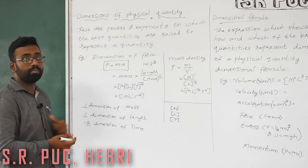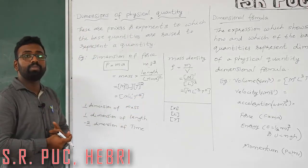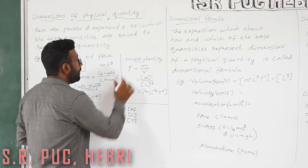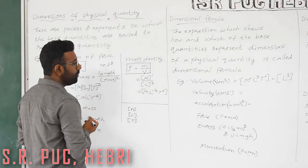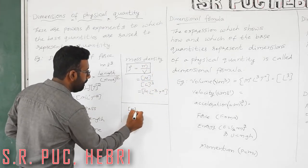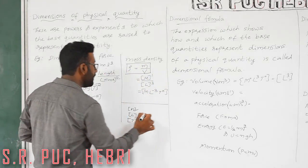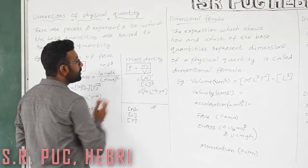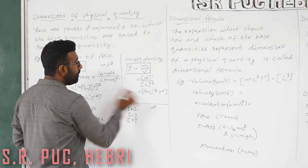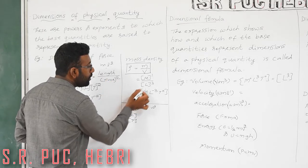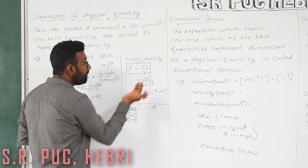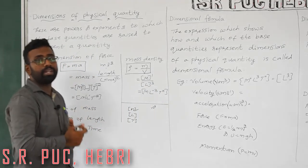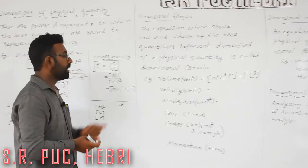This is nothing but the dimensions of a physical quantity. For another example, take mass density: rho = m/v. Volume v is length × length × length, so L³. The dimension of mass is 1, length is minus 3, and we have no time at all, so the dimension of time is 0. The dimensional formula of density is M L⁻³.